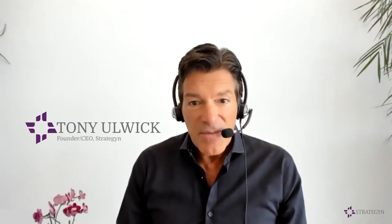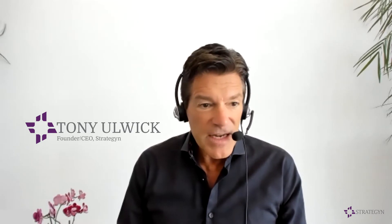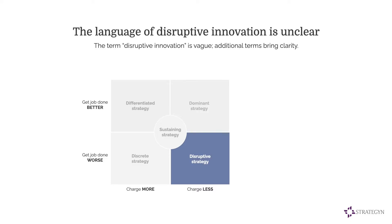Can the theory be better applied or understood through a jobs-based lens? The question we ask is: why is Uber considered an outlier, and how is its success best explained? What we've learned is that the language of innovation — disruptive innovation — is a bit unclear, and the term disruptive innovation is vague.